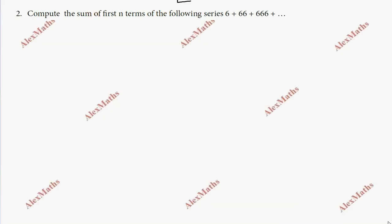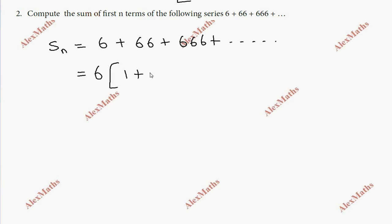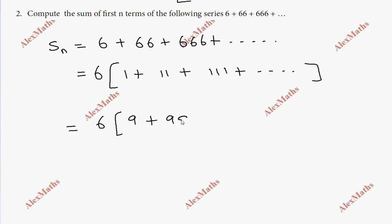Question number two: find the sum up to 20 terms of the series 6 + 66 + 666 + dot dot dot. We rewrite this as 6 times (1 + 11 + 111 + ...), which is the same as dealing with 9 + 99 + 999 + dot dot dot after multiplying and dividing by 9.